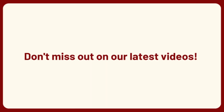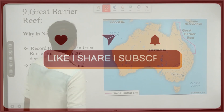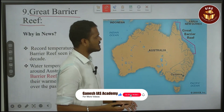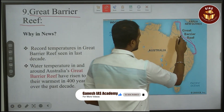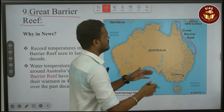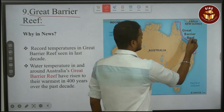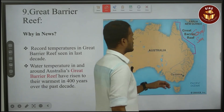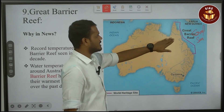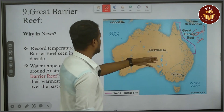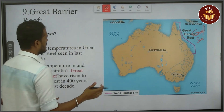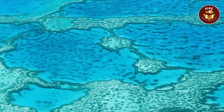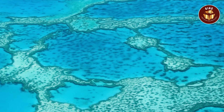Don't forget to like, subscribe, and share the videos. Next is the Great Barrier Reef. The Great Barrier Reef is located on the east coast, in the Coral Sea. The half coast is located on the east coast, and there is a temperature increase in the Great Barrier Reef.